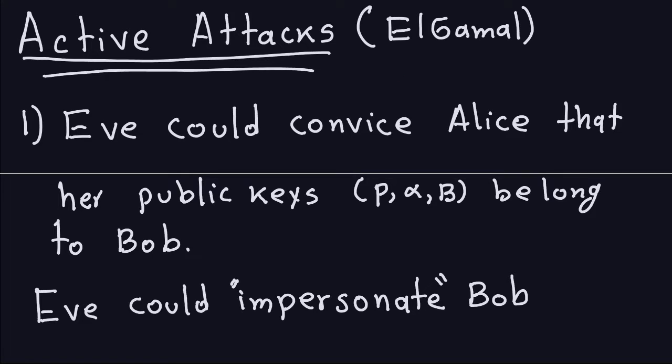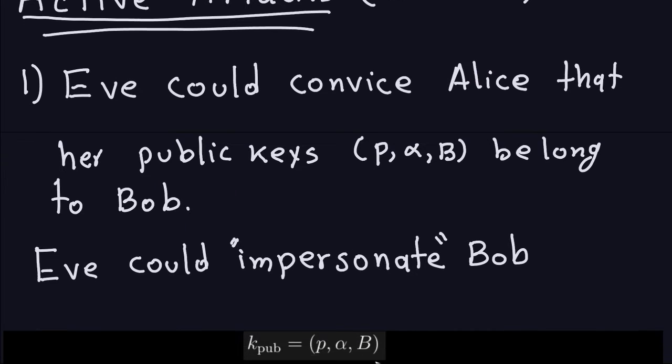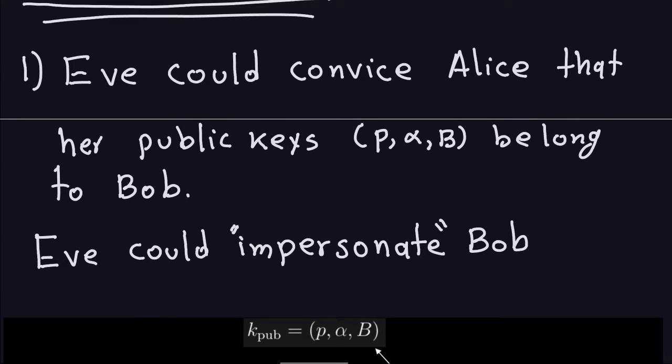In this case let's talk about a couple of things that Eve can do to attack the ElGamal scheme. So one thing that she can do is convince Alice that her public keys P, Alpha and B belong to Bob. So Eve will be the one generating the prime, the alpha and the number B and try to convince Alice that that's Bob's public keys. So Eve could impersonate Bob.